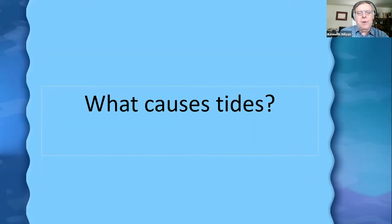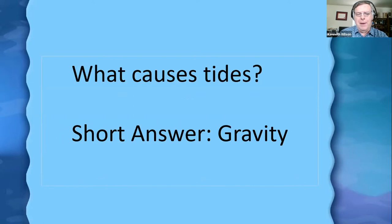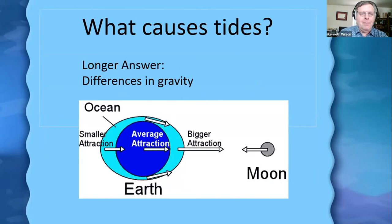And that leads to the question: what causes the tides? The simple short answer is gravity. But you've come here for more information than that, so let's delve a little bit deeper. The longer answer is tides are caused by differences in gravity.